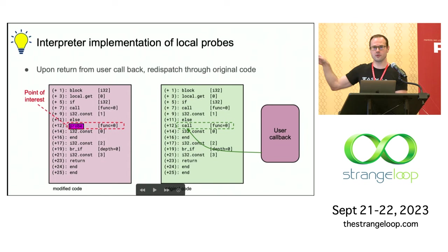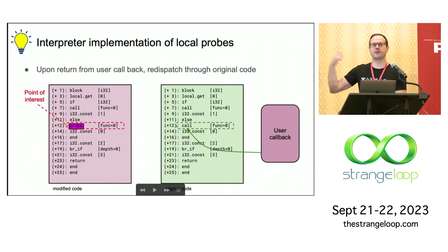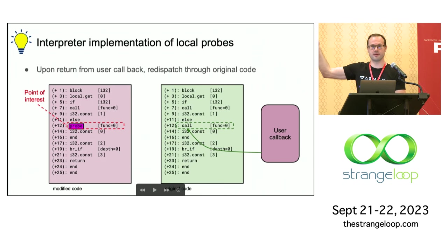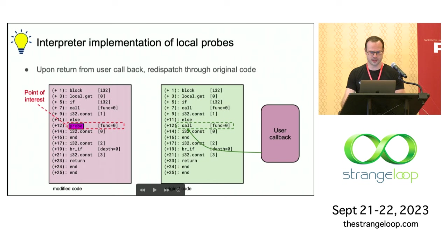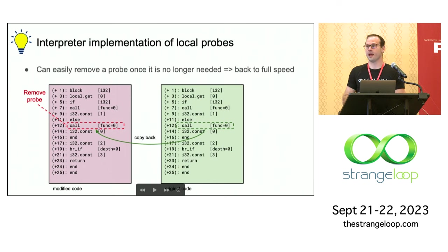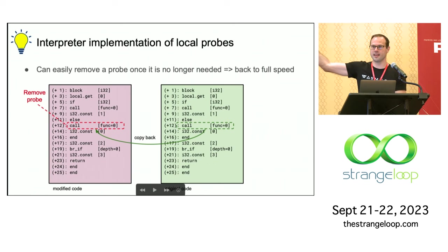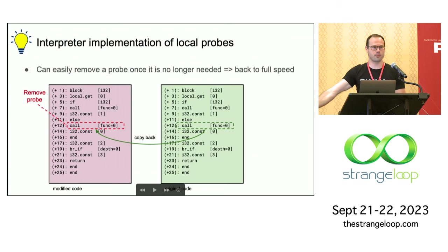After we've called the user callback, we actually want to execute the code that was there. Since we have the original code, we can just load the original byte from there, and since we know the offset, that's actually very efficient — no searching, no inserting bytecodes with unknown offsets. Then we'll just execute the original code. The great thing is we can also remove probes: just take the byte from the original code and write it back, and the interpreter won't trip over the bytecode and we go back to full speed.